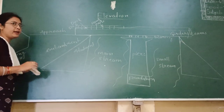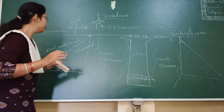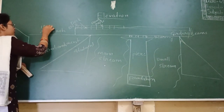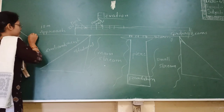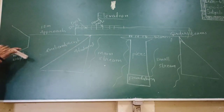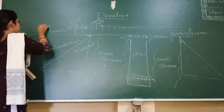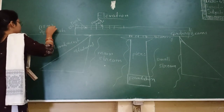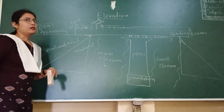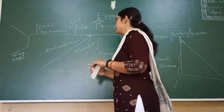As per IRC, the length of approach is 15 meters minimum distance which will be provided before the bridge. These are the components of the bridge.